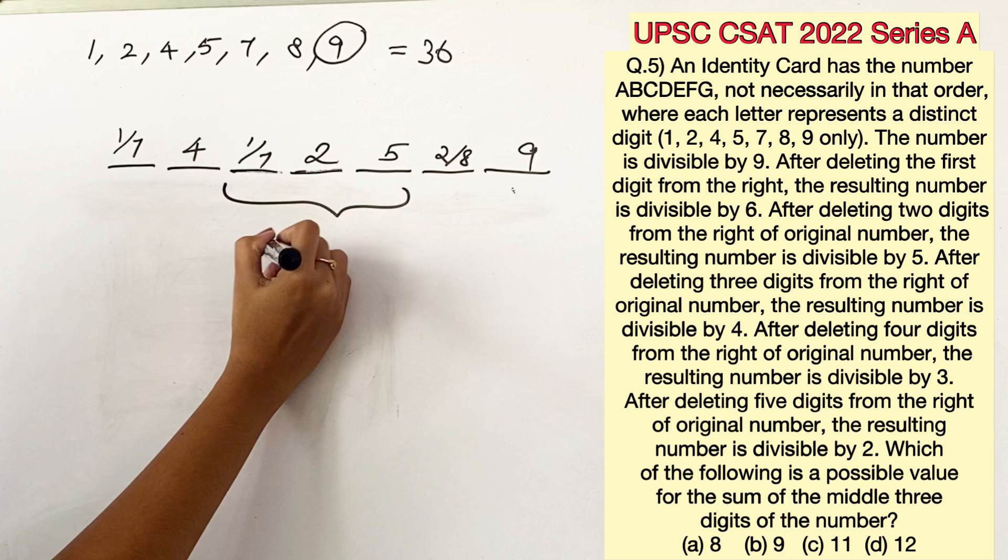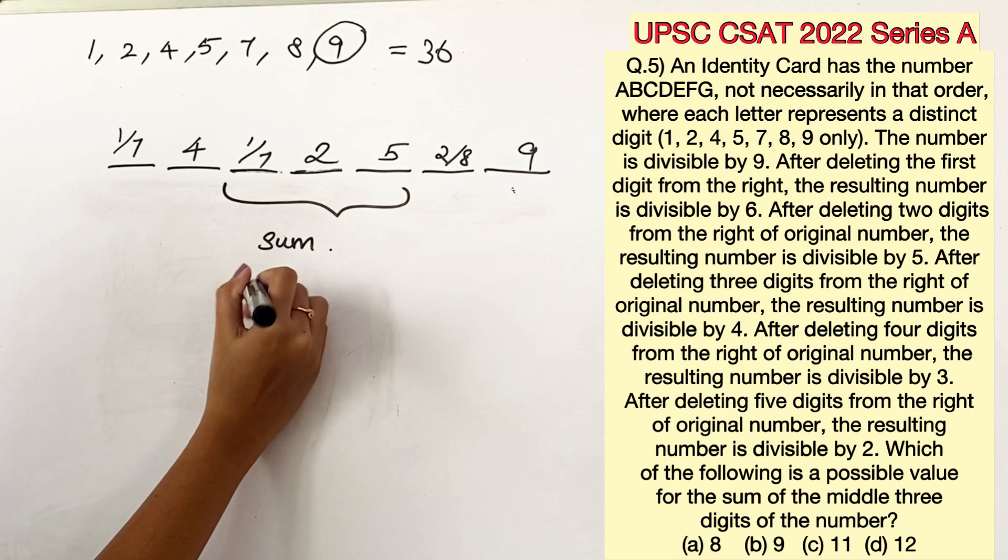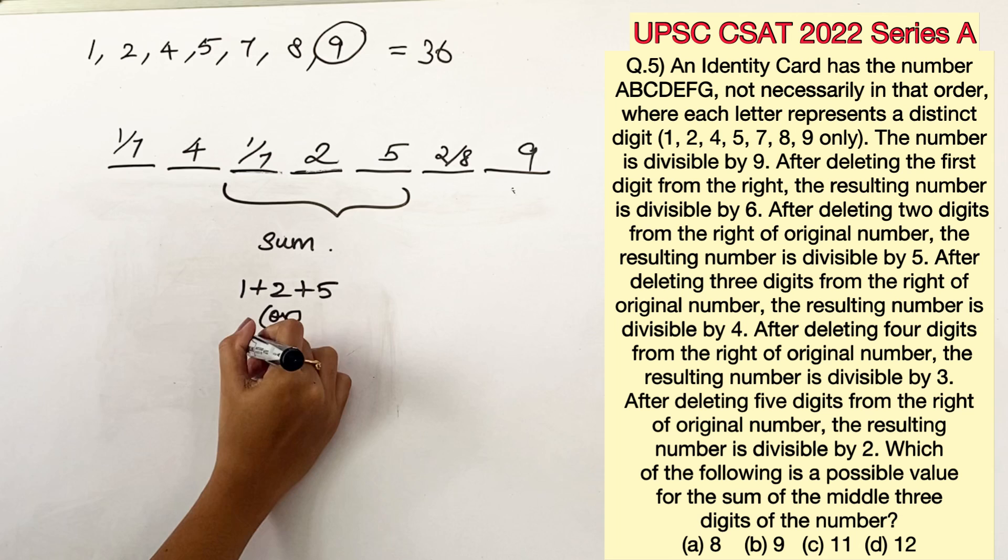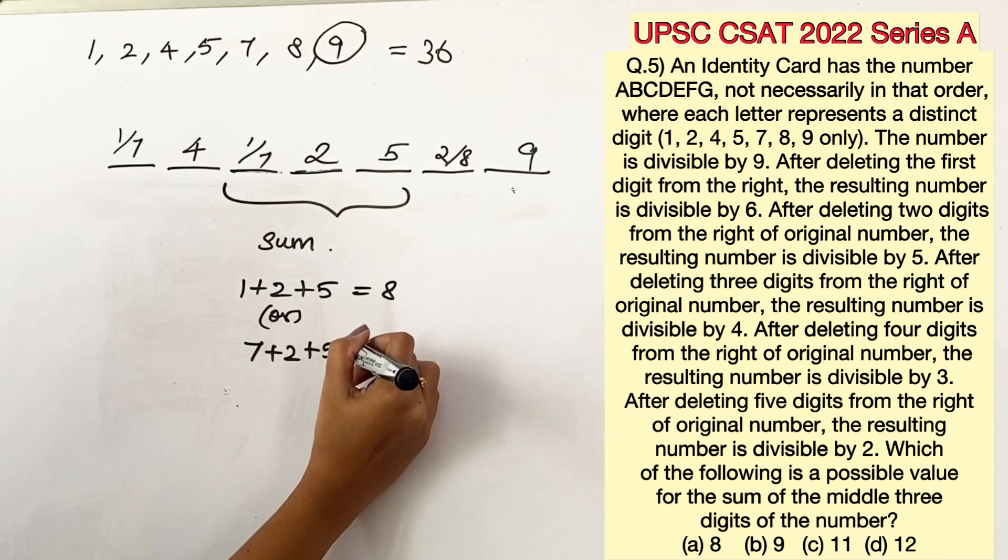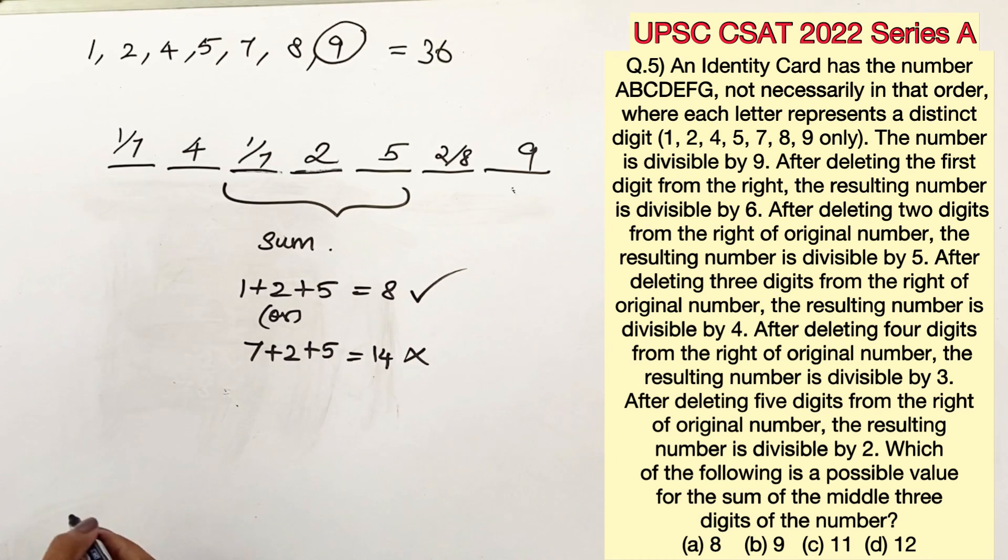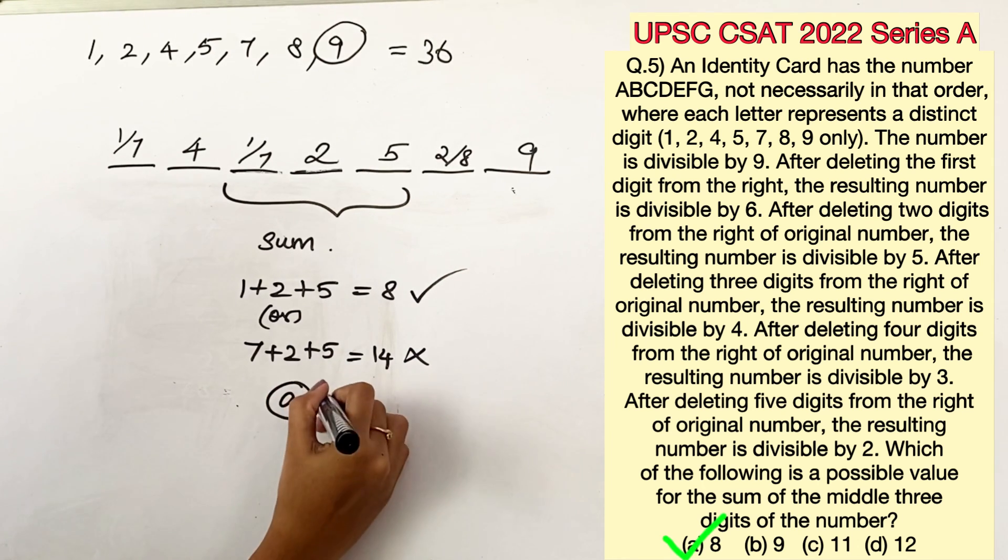Now the real question is the sum of the middle 3 digits. We have 2 different possibilities where it can be 1 plus 2 plus 5 or 7 plus 2 plus 5. So this gives us 8 and this gives us 14. Since 14 is not in the option 8 is the right one. So option A is the right answer.